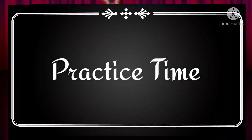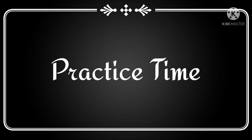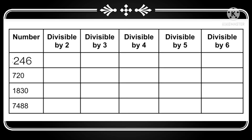So this is the first part of our divisibility rules, and now it's practice time. There is a table in front of you — let's discuss the divisibility of these numbers. The first number is 246. Since 246 is an even number, it is divisible by 2. Now let's add the digits to check divisibility by 3: 6 plus 4 is 10, plus 2 is 12. Since 12 is divisible by 3, 246 is also divisible by 3.